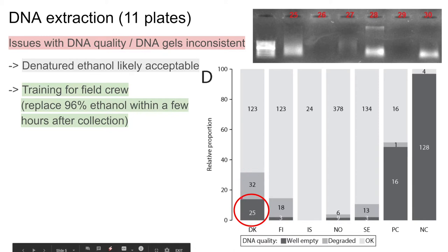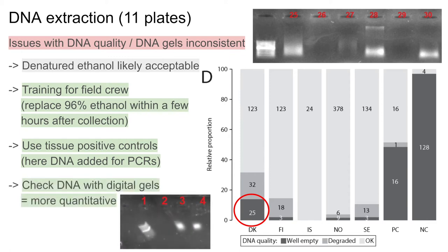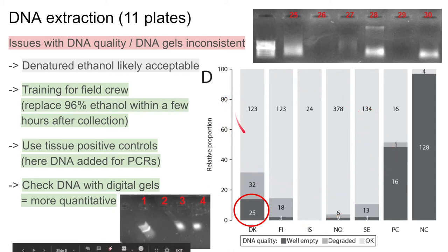Here we recommend that there is some better training for the field crews in sample collection. Also, next time we will include extraction positive controls in the extraction plates. We also recommend checking the DNA quality using digital methods, because running gels can be a little bit inconsistent sometimes. But overall, the majority of the samples did have good DNA quality.